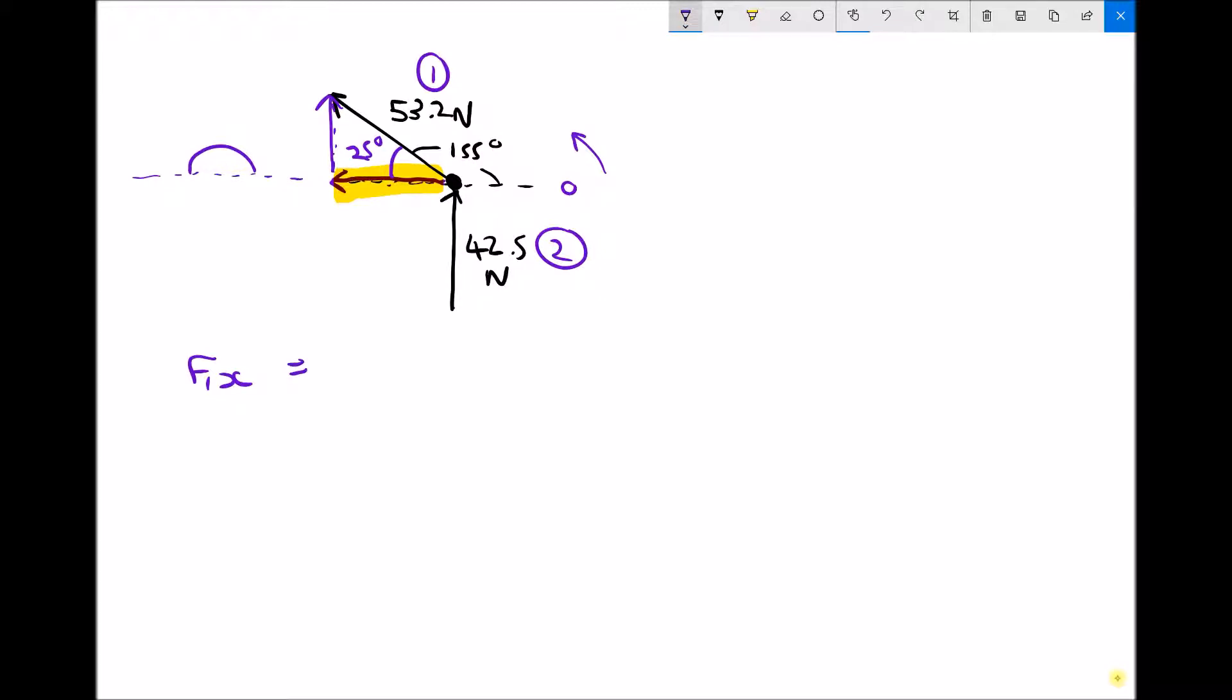We can label our triangle. We've got the hypotenuse, we've got the opposite, and we've got the adjacent, which is what we're trying to find. And remember from the previous video, adjacent is hypotenuse cos theta and the opposite is hypotenuse sin theta. So we want to find the adjacent. We know the hypotenuse is 53.2, so we're going to have 53.2 cos of the angle, which is 25 degrees. So F1X is 53.2 cos 25, which is 48.22 Newtons.